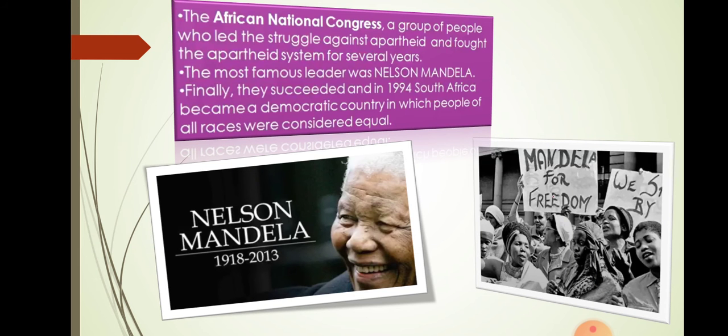The African National Congress, a group of people who led the struggle against Apartheid, and their most well-known leader, Nelson Mandela, fought the Apartheid system for several years. Finally, they succeeded, and in 1994, South Africa became a democratic country in which people of all races were considered equal.